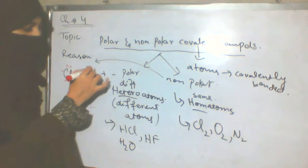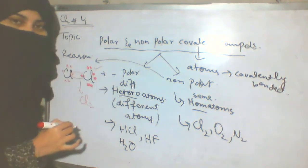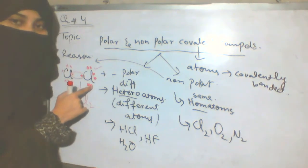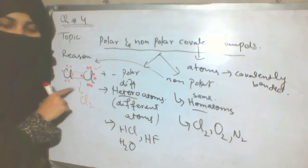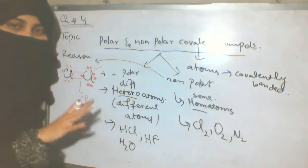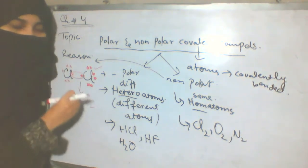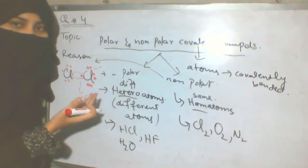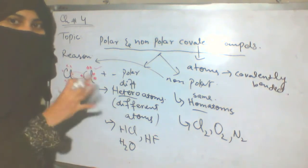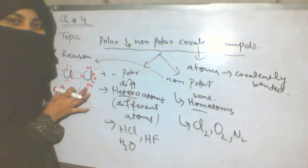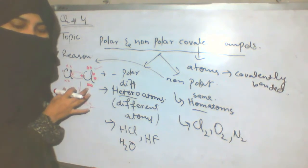So the bond formed is Cl₂. Both chlorine atoms pull the electrons equally — they are comparably electron negative. That is why the bond is non-polar; no positive or negative charge is generated. This is called comparable electronegativity, and these are called homo atoms.